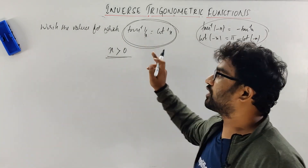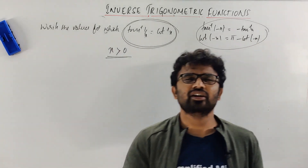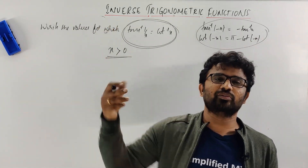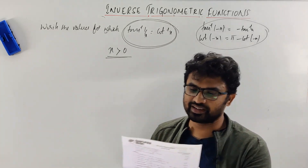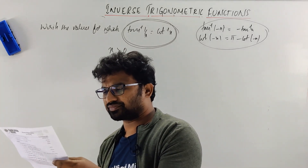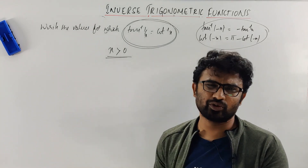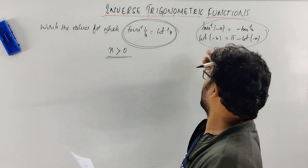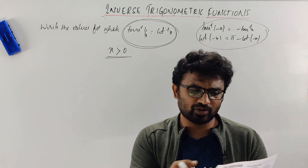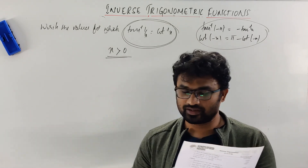Without understanding, you can do it — but it's not required to just memorize without understanding. For example, tan⁻¹(−x) = −tan⁻¹(x) directly. And also, try: cot⁻¹(−1/√3) — please do it by yourself. It's a worked example from NCERT. You can do that.